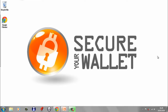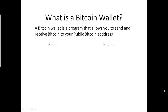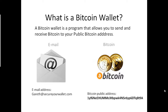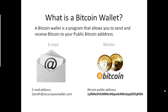So we're going to start off with some theory on Bitcoin wallets. What is a Bitcoin wallet? A Bitcoin wallet is a program that allows you to send and receive Bitcoin to your public Bitcoin address. I'm going to use the analogy of email to explain Bitcoin. In email you have your email address, which allows people to send email to you and you can send email to them — and in Bitcoin you have the same thing, called your Bitcoin public address.